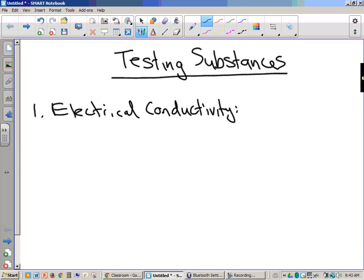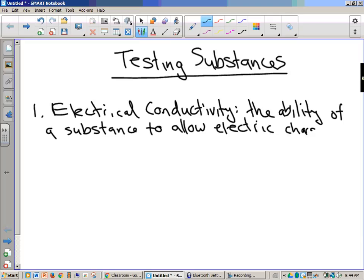What does it mean for a substance to be conductive? Does anybody know what it means for a substance to be conductive? It allows electricity to run through it. Now, I'm going to write out a definition that's a little more specific than that, but that's exactly correct. Electrical conductivity is the ability of a substance to allow electric charges.